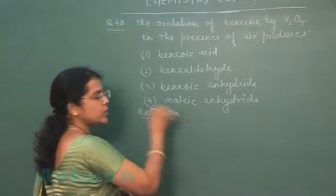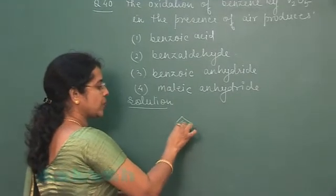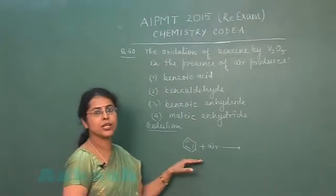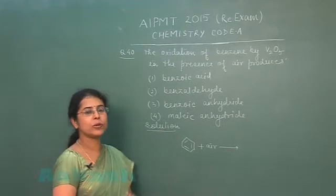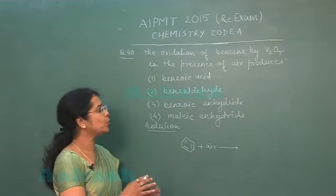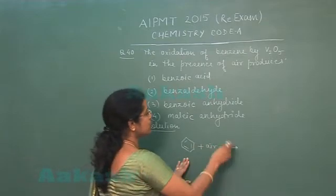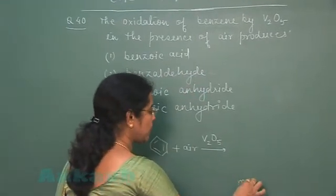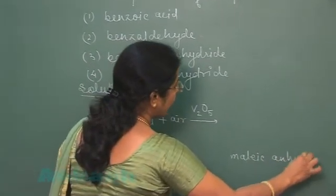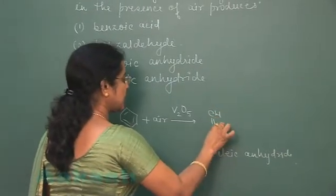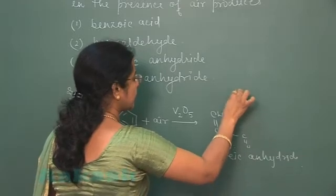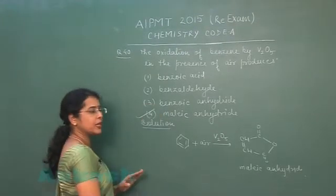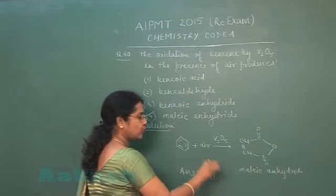This is a fact-based question. Benzene is a stable liquid, but when oxidized under different conditions, different products are obtained. Oxidation by chromium oxide gives benzaldehyde; oxidation by KMnO4 gives no reaction. When benzene is oxidized by air in the presence of catalyst vanadium pentoxide, the product is maleic anhydride. Therefore, the fourth option is the correct answer.